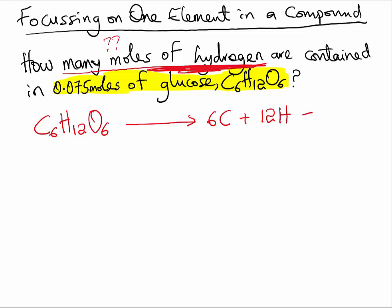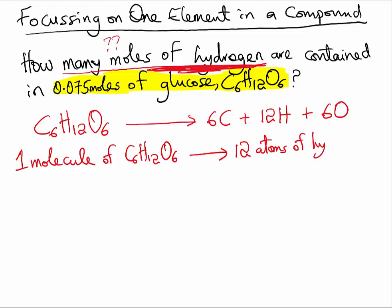and six oxygen atoms. Which means that by smashing one molecule of C6H12O6, you will get 12 atoms of hydrogen. The relationship between the molecule and the carbon can also be interpreted as